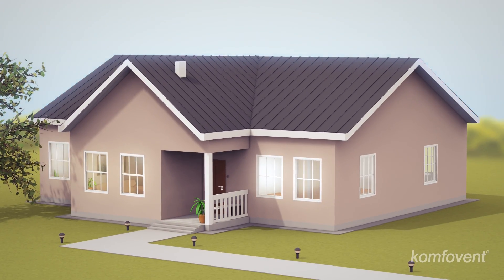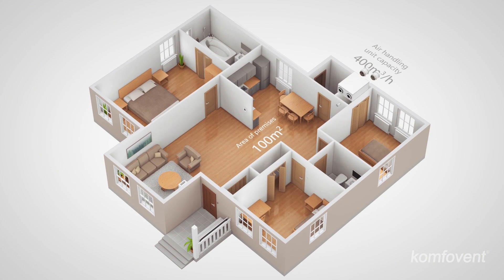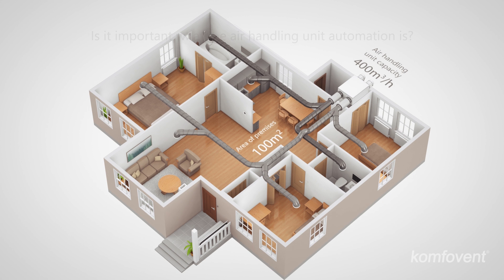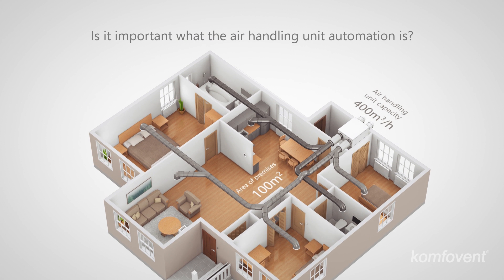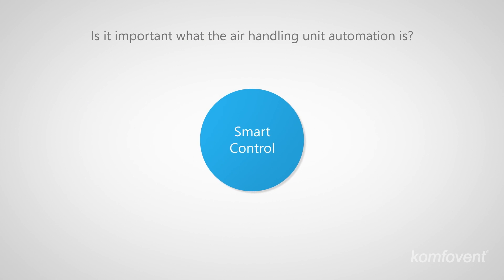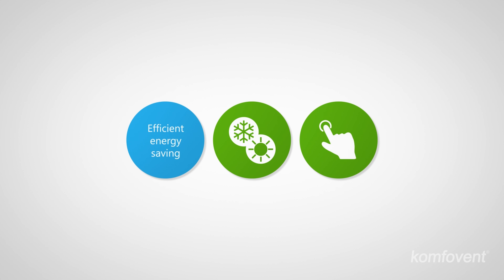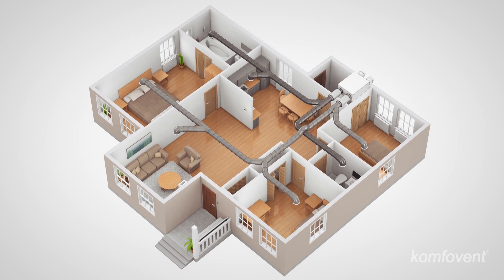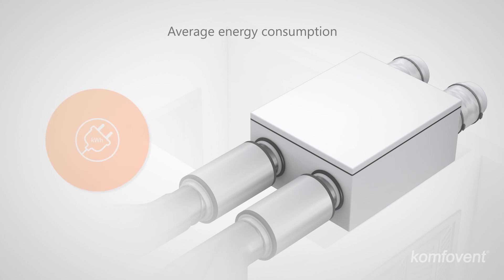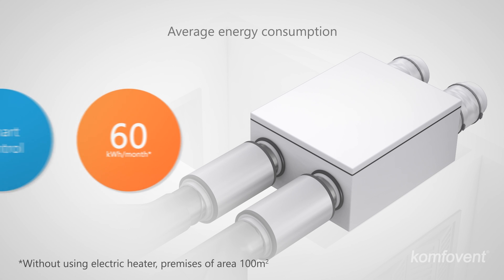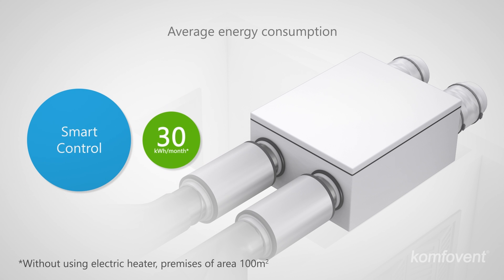The recuperation system in your home ensures the necessary level of fresh air and saves energy. Automation technology has a great impact on system performance. Smart control reduces power costs of air handling units, adjusts ventilation to your everyday needs, and provides a wide range of control options. It has been estimated that smart control allows reducing the average cost of electricity for ventilation by half.